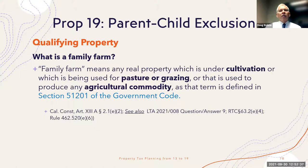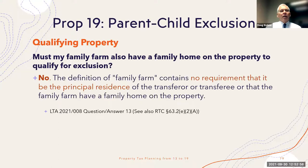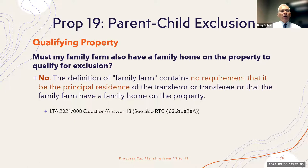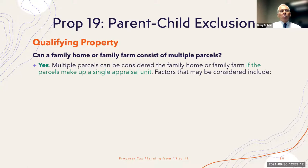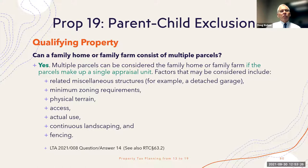Family farm is defined as real property that is under cultivation, pasture, or grazing, or used for agricultural commodities. We may see an uptick in people wanting to acquire family farms to pass on to their children, given the favorable treatment. There is no requirement that a principal residence be on the family farm — it can be just a farm with no home. As for whether a family home or family farm can consist of multiple parcels: if the parcels make up a single appraisal unit, then yes.